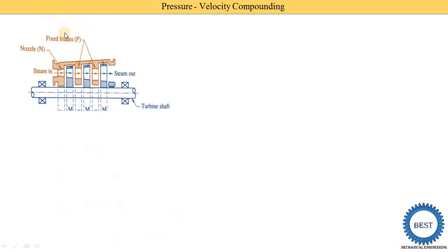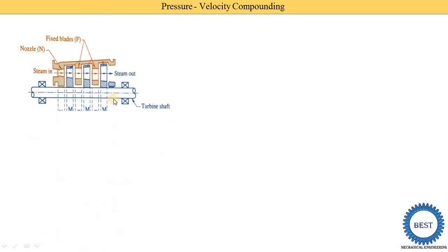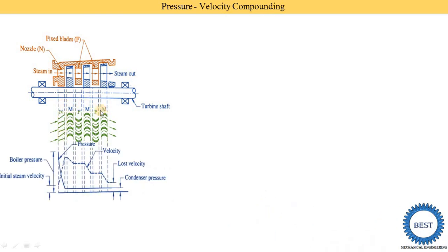Here you see this is the diagram of the velocity compounding. The first element is the nozzle, and these are the fixed plates mounted on the casing. These are the moving plates: nozzle, moving plate, fixed plate, moving plate, fixed plate, and moving plates. This is the pressure versus velocity diagram. In this nozzle the pressure is reduced from boiler pressure to condenser pressure, and the velocity is partially dropped in the moving plates. This is the simple velocity compounding.